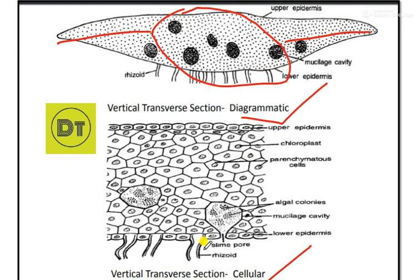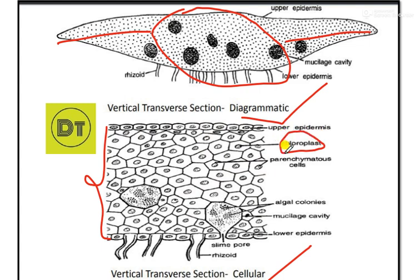We will see the cellular diagram, which is very simple. The cells — except those of the lower epidermis — contain chloroplasts. Some cavities can be seen, and their name is Mucilage cavity. The mucilage cavity communicates to the outside through pores known as slime pores — very important. These slime pores open into the mucilage cavities.